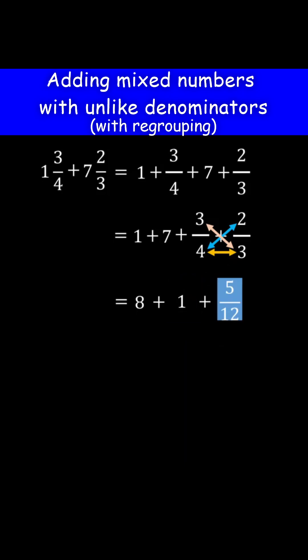As you can see now the fraction part is a proper fraction. 8 plus 1 is 9. Now you can write 9 plus 5 over 12 as a mixed number 9 and 5 over 12. Therefore this is the answer.